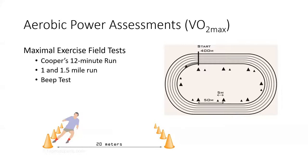Why use the beep test for change-of-direction sports? Because the demand of sports like soccer, tennis, and basketball is to run hard, stop, and go in different directions — the beep test aligns more to those demands. A continuous one-mile run is less specific to most of my athletes.